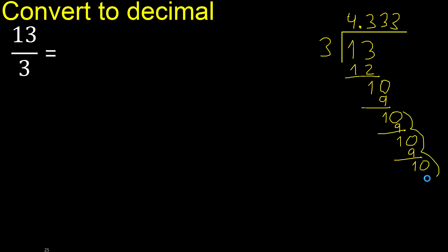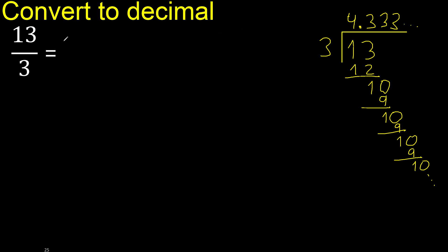This pattern repeats — therefore 3 repeats. The digit 3 continues to repeat in the decimal. So the answer is 4.333... where 3 repeats indefinitely.